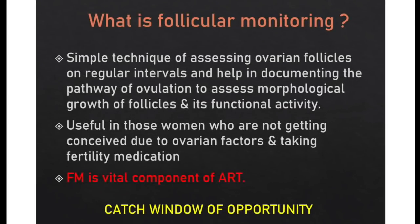In a normal 28-day cycle, a woman ovulates midway anywhere from day 12 to day 16 or she may occasionally fail to ovulate. If she ovulates, there is a small window of opportunity, roughly 12 to 24 hours for fertilization before the egg degenerates. Catching this window of opportunity by monitoring the cycle and predicting ovulation at least 24 to 36 hours in advance gives more accuracy and an increased rate of conception.